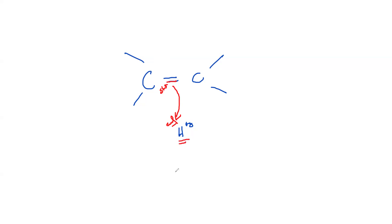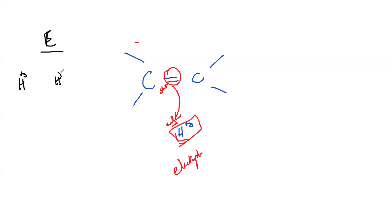Hydrogen is an electrophile — not a nucleophile — because it is attracted towards the electron-rich side, or it carries a partial positive or a full positive charge. Simple rule: if it is an electrophile, it will have either a partial positive or a full positive charge. If it is a nucleophile, it will have a lone pair, a negative charge, or both.